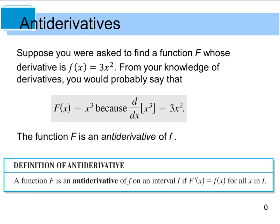I want to point out that capital F is an antiderivative, not the antiderivative. That's because if F(x) = x³ + 3, this has the same derivative as x³, because we don't take the derivative of the constant. So the antiderivative should really be written as F(x) = x³ + C, where C is some arbitrary constant.